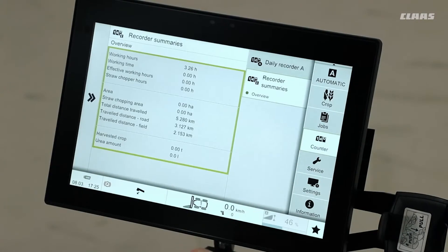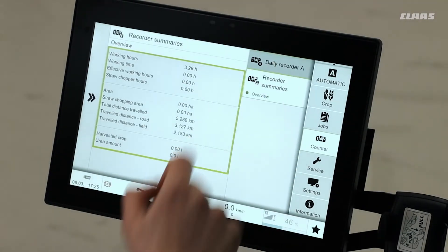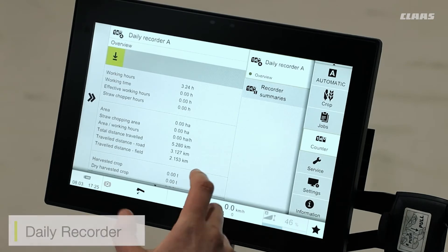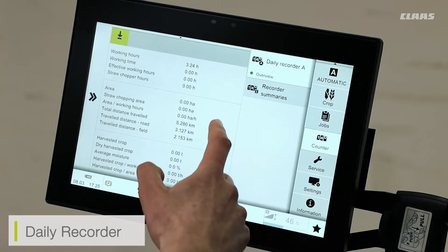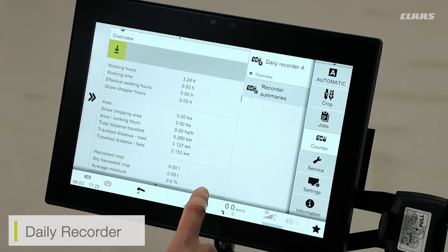Into the counter sub-menu through the CEBIS screen, we can see two options. We can save and select a daily recorder, showing what our machine has done that day or until we last reset it.